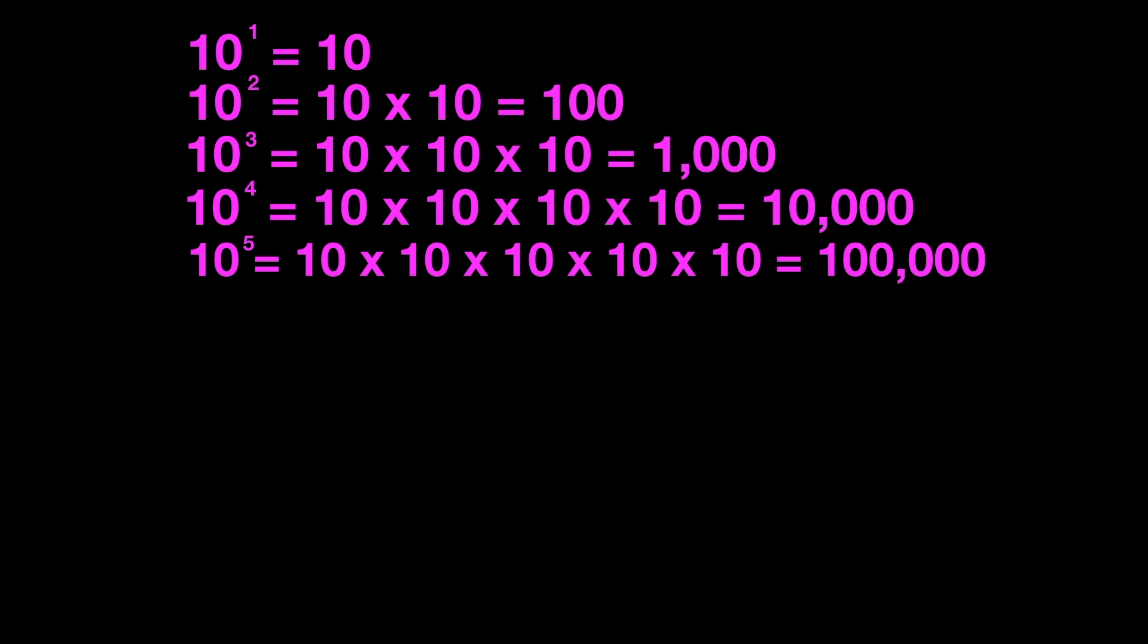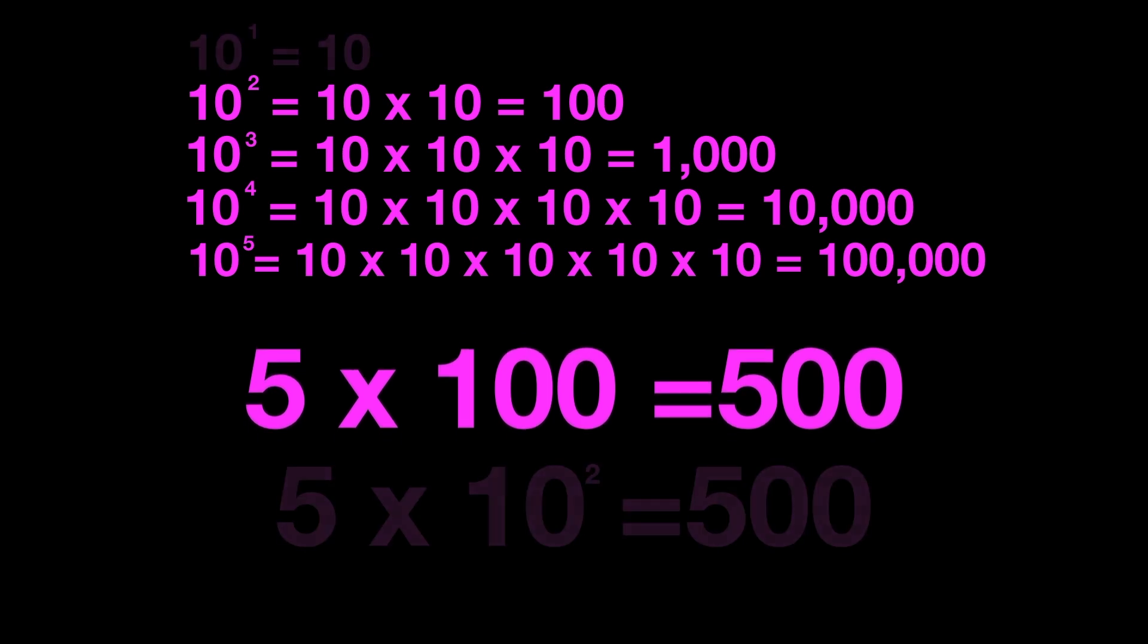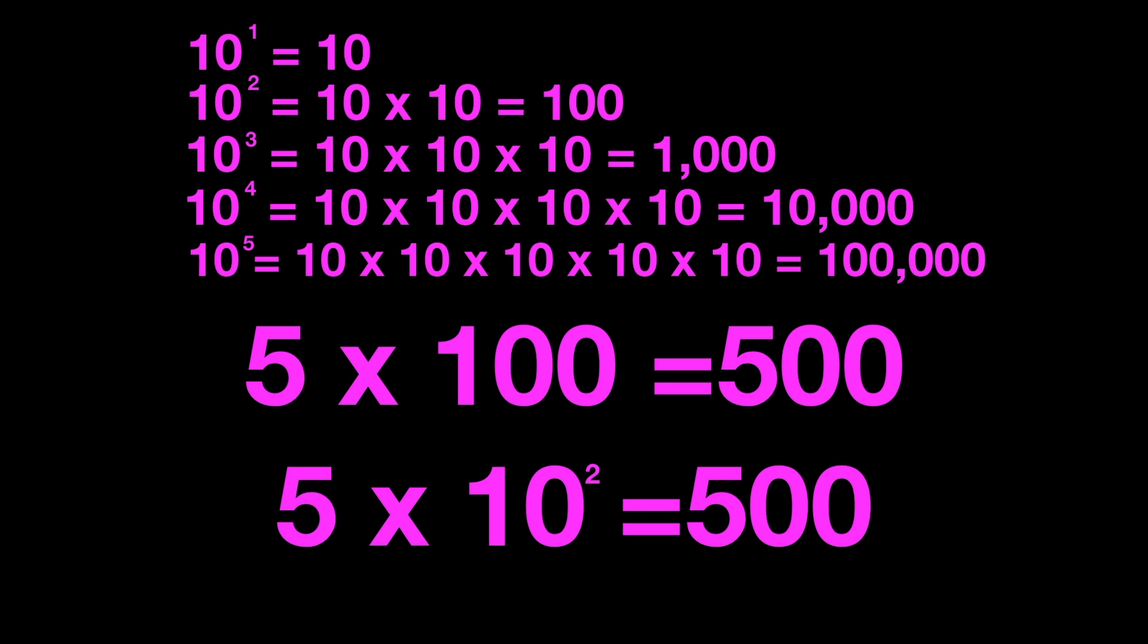We can use that pattern to help us when we're working with powers of 10, whether they're expressed with exponents or not. Let's look at what we know and use it to help us figure out what we don't know. So we know 5 times 100 is 500. That means we also know that 5 times 10 to the power of 2 is 500, because 10 to the power of 2 is just another way of expressing 100.